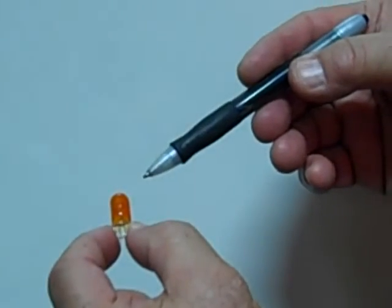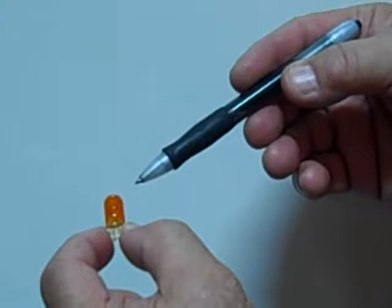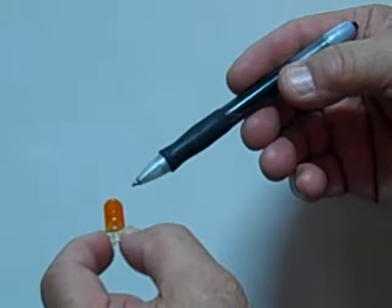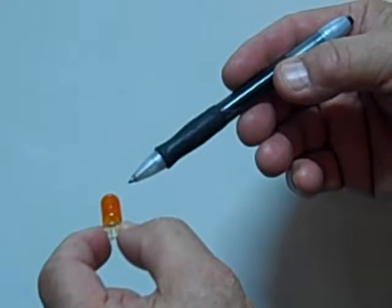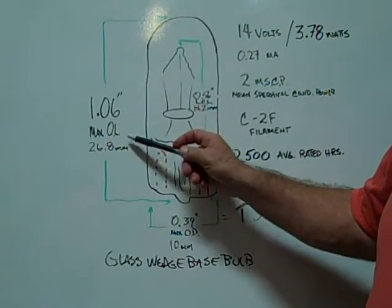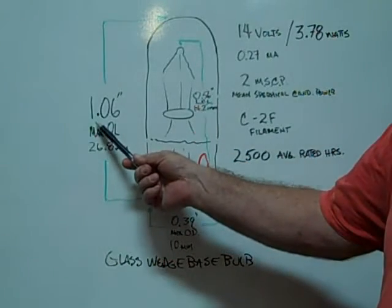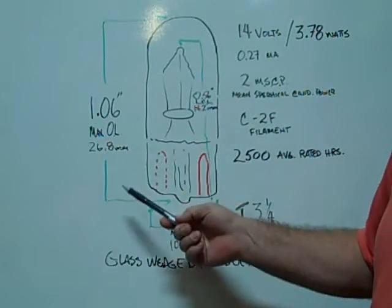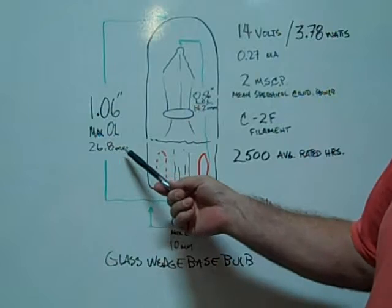This is an example of a 194 natural amber not painted miniature glass wedge-based bulb. The maximum overall length is 1.06 inches or 26.8 millimeters.